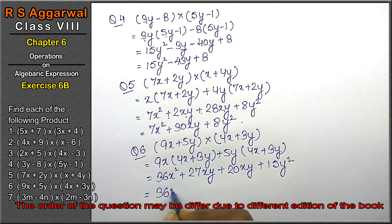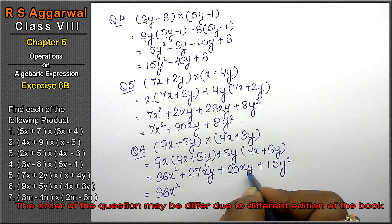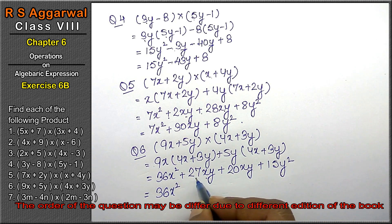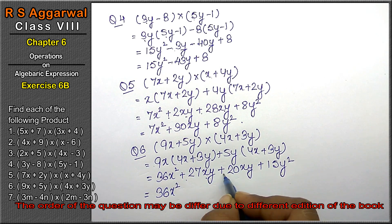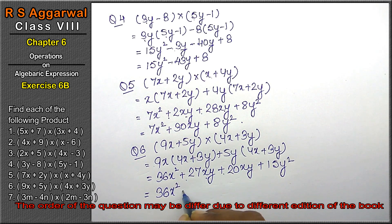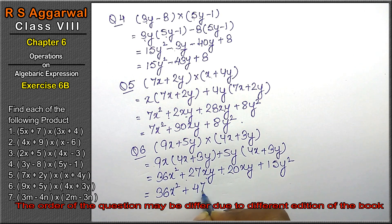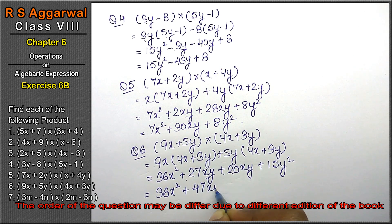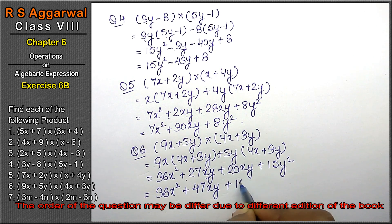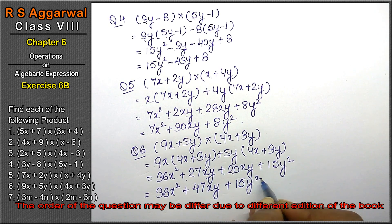36x squared. The xy terms, 27xy and 20xy, have the same variable and positive signs, so we add them: 47xy. Plus 15y squared is the answer.